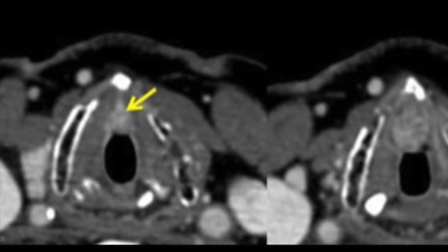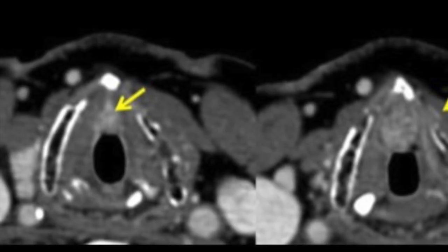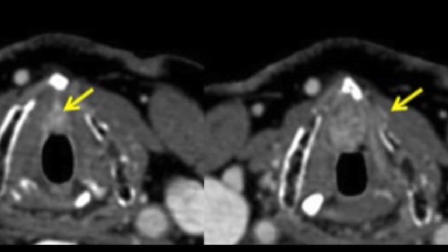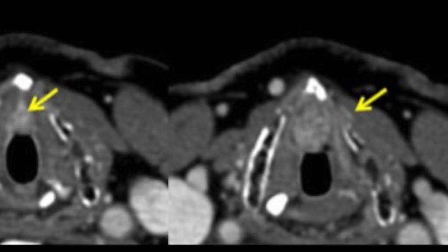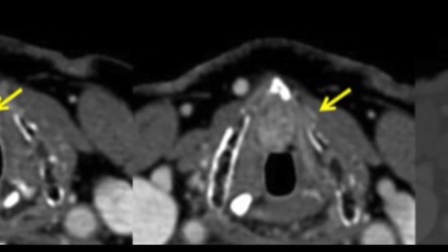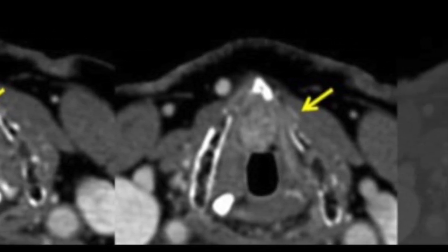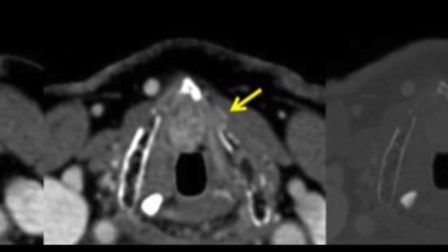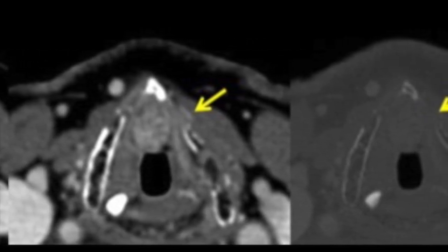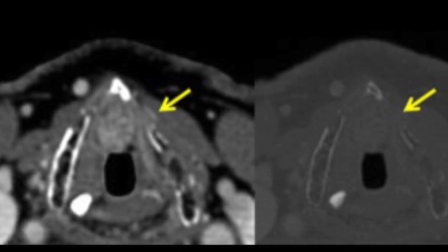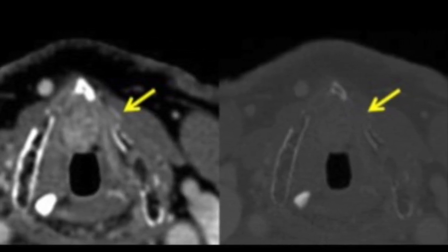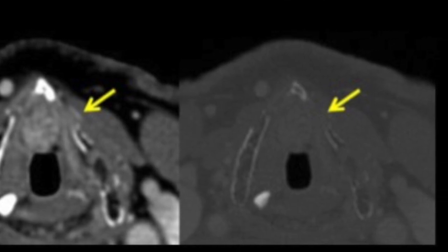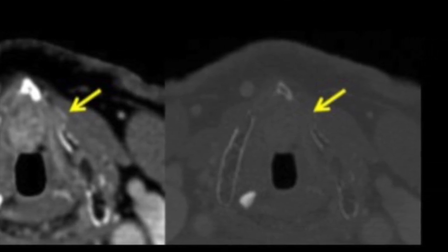The notorious anterior commissure disease is highlighted because these diseases are close to the region of Broyle's ligament attachment where the perichondrium is deficient. These diseases are known to involve the outer cortex at an early stage and can appear as T1 but actually be T3 and T4. One should bear in mind that anterior commissure disease needs to be evaluated with both the Broyle's algorithms and MRI.